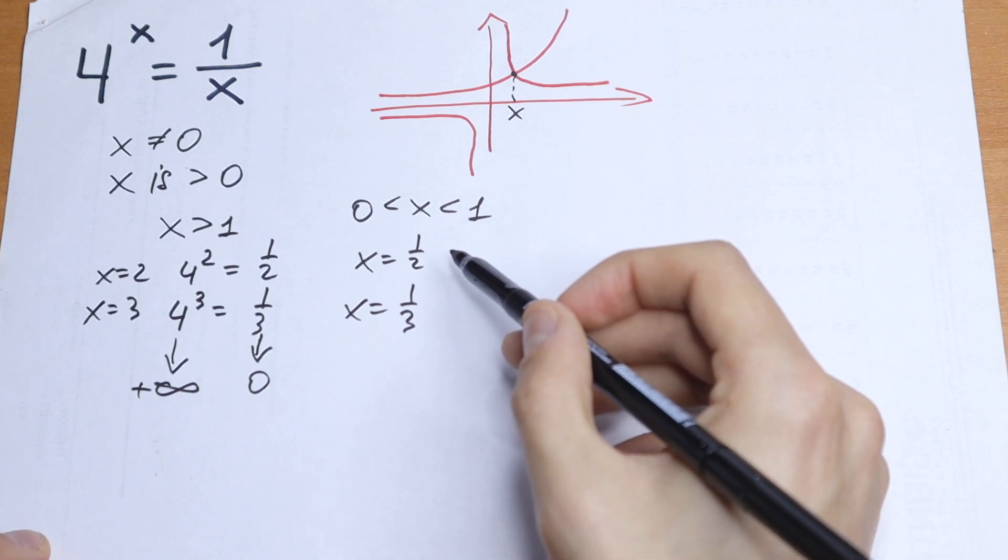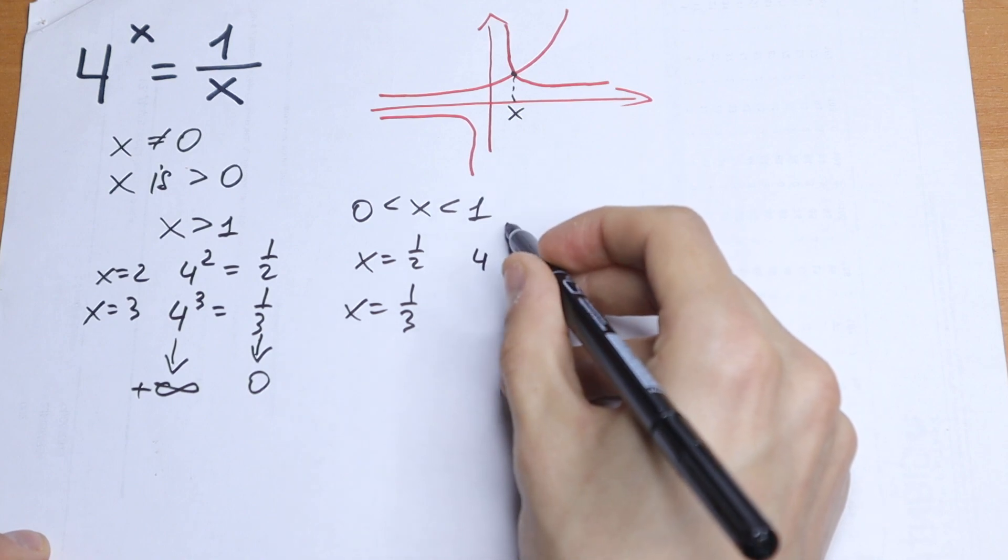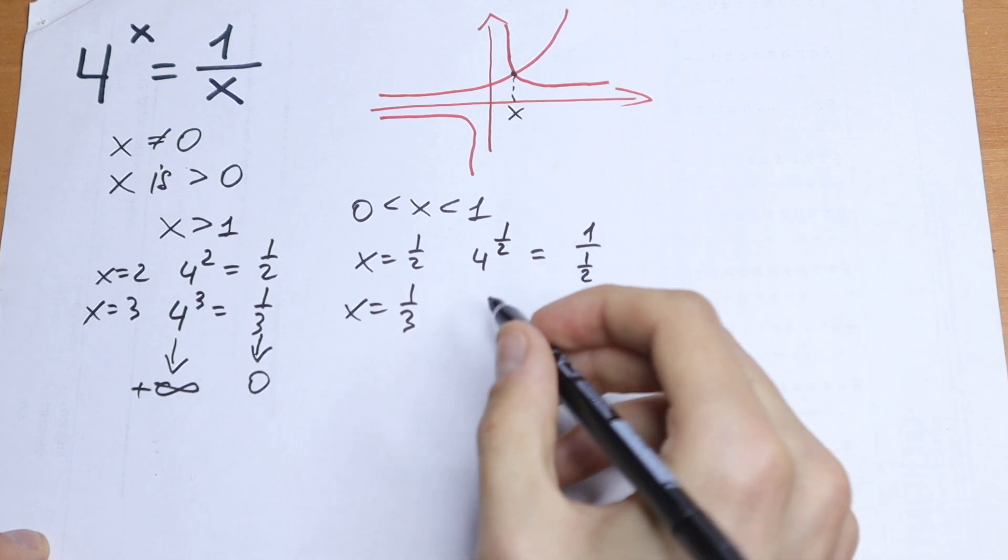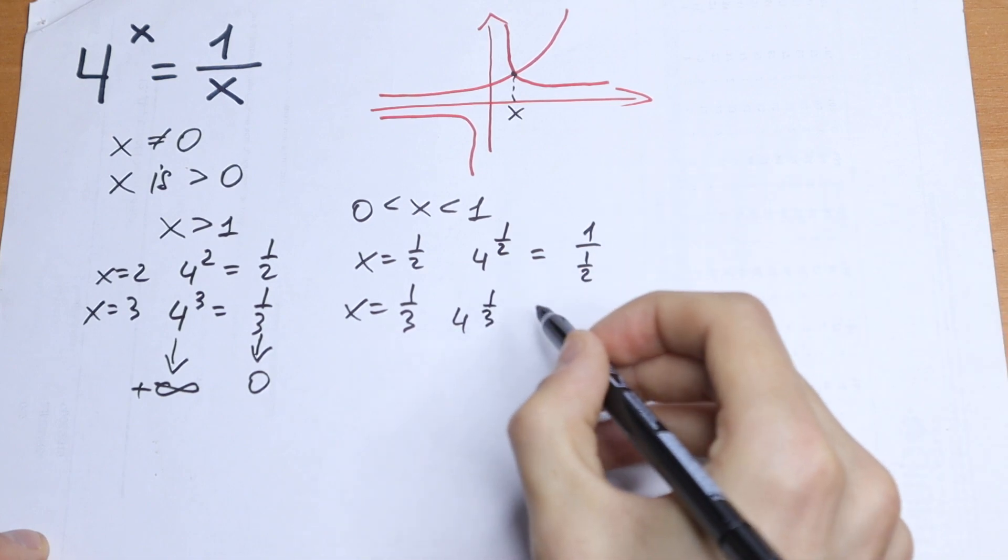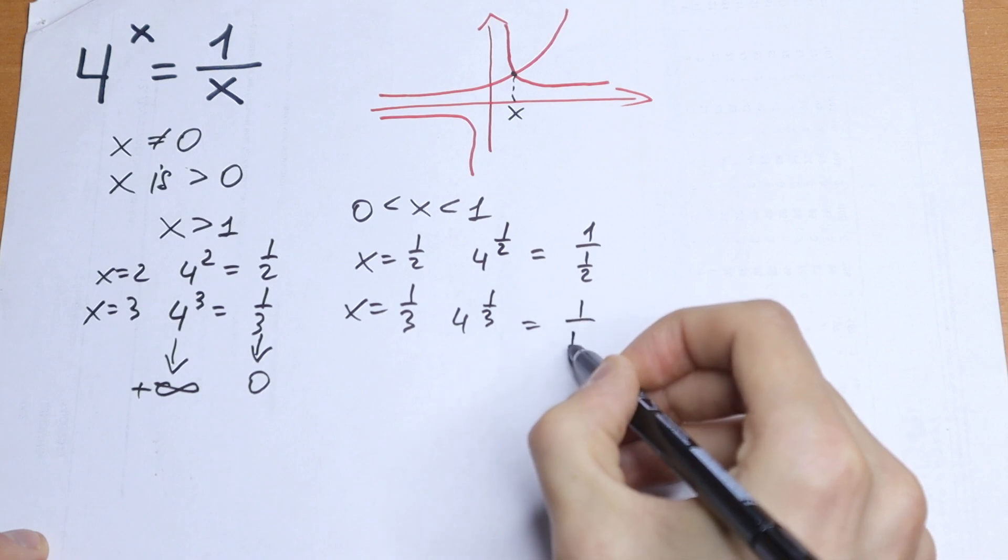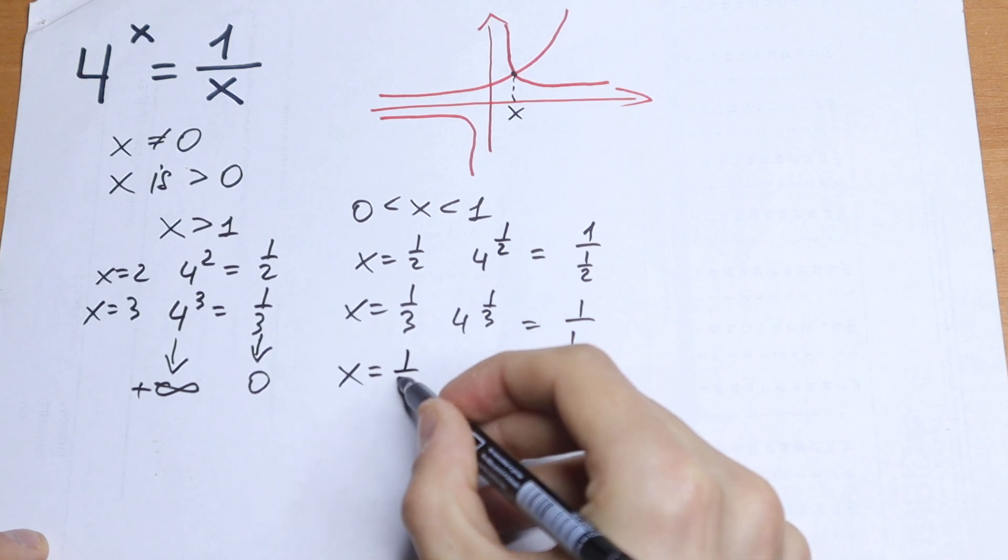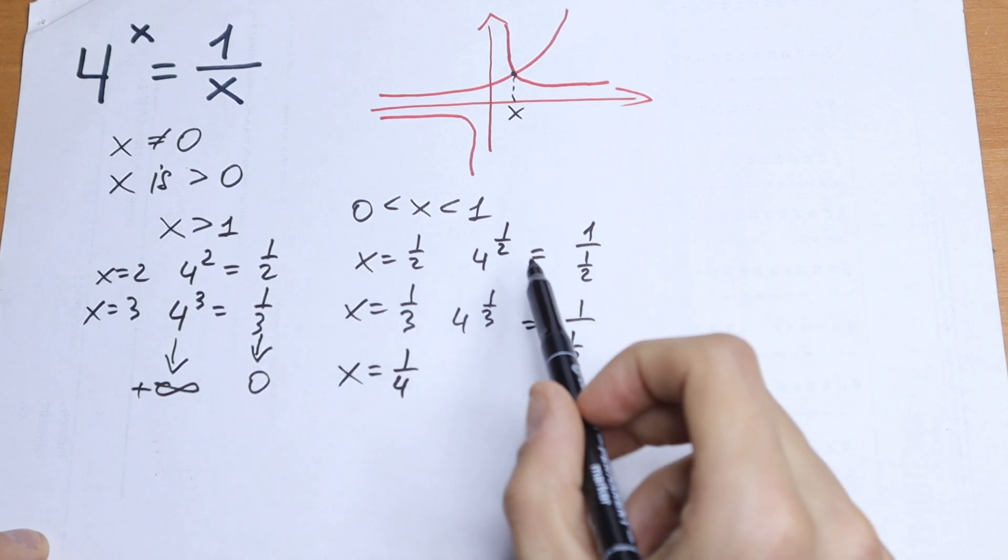So we will have 4 to the power 1 half equal to 1 over 1 half, and 4 to the power 1 third equal to 1 over 1 third. And maybe we need to check 1 over 4. I don't know. Let's try with this one.